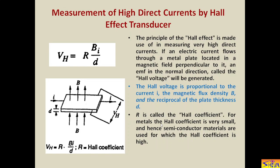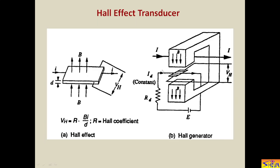The Hall coefficient is very small for metals, hence semiconductor materials are used for which the Hall coefficient is high. For accurate measurement, the proportionality constant should be as high as possible, so in place of a metal plate we use a semiconductor material. This is the Hall effect transducer. Current I flows through the semiconductor plate, and a magnetic field is perpendicular to it, generating a Hall voltage in the normal direction. Capital I is the current to be measured.